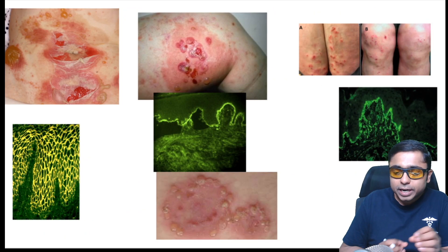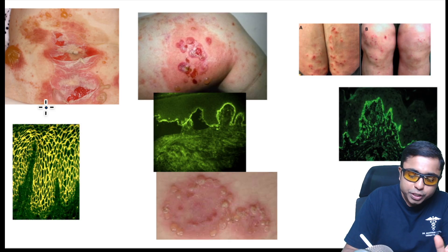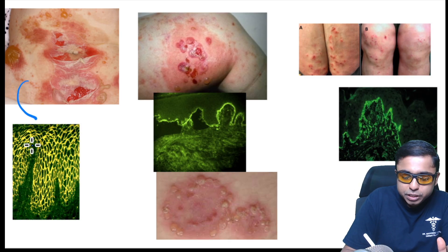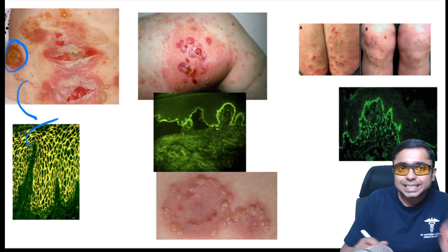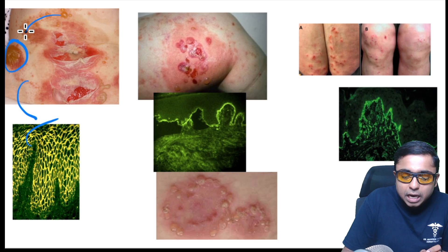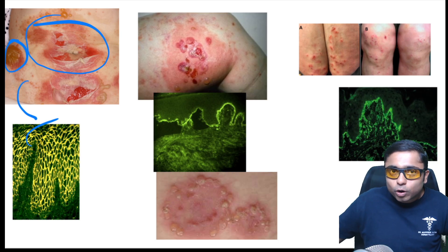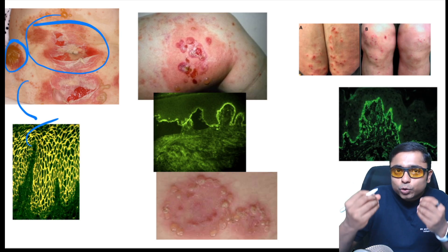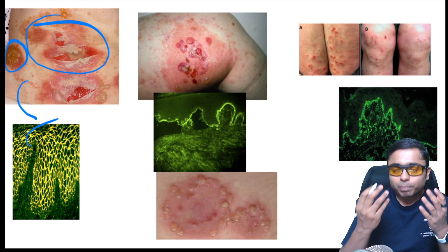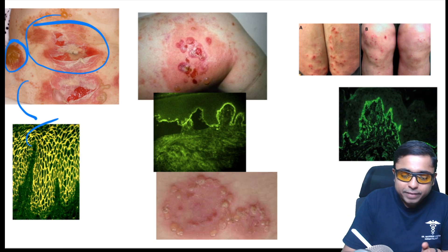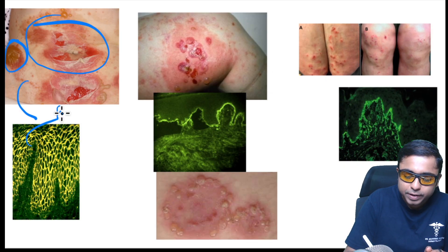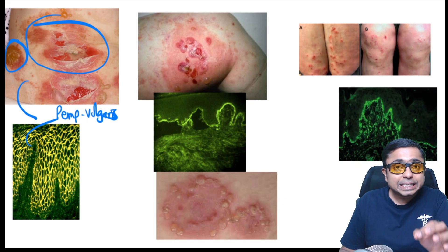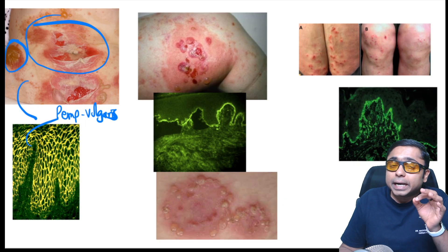Next is a very important slide on vesiculobullous disorders. The first picture shows flaccid bullous lesions with a tendency to extend onto surrounding normal-looking skin. Biopsy shows a row of tombstone appearance and DIF shows a fishnet pattern. The diagnosis is pemphigus vulgaris — an intraepidermal blistering disorder.